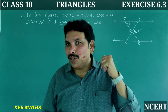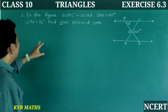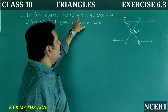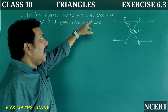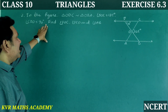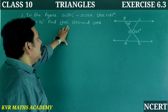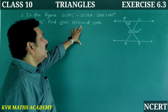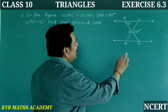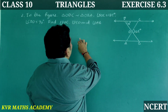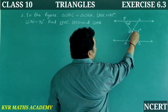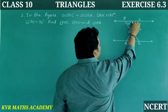Second question: In the figure, triangle ODC is similar to triangle OBA. Angle BOC is equal to 125 degrees and angle CDB is equal to 70 degrees. Find angle DOC, angle DCO, and angle OAB.